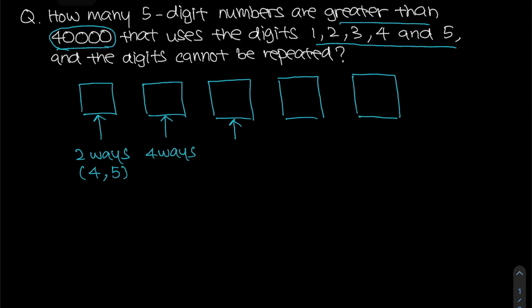Similarly, for the third digit, we have a total of 5 digits but we have already used two for the first two digits, which means we are only left with a total of 3 ways.